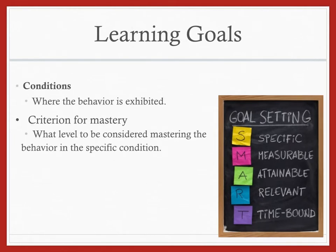The second component is conditions — where should that behavior be exhibited? It should be exhibited in a written exam, a clinical setting, or a practical exam. The third part is the criterion for mastery — what level is considered mastering that particular behavior in the specific condition? We have to ask ourselves: what should an entry-level athletic trainer reach? How good should they be on that particular goal or objective?